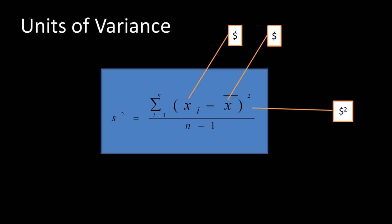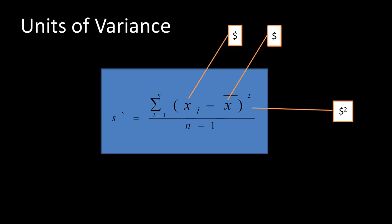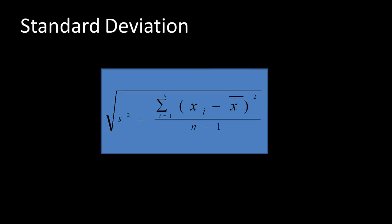This is a slight problem because you cannot really have a good grasp of what dollars squared means — it is not intuitively obvious. There is no way to compare it with the base units in which things are measured. That is why it is sometimes difficult to use variance by itself. Therefore, it is standard practice to take the square root of the variance.